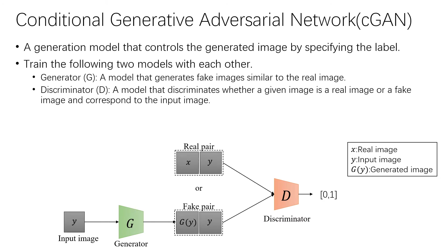In our research, we use Conditional Generative Adversarial Network, also named CGAN, to achieve this task of AdFont generation. CGAN is a generation model that controls the generated image by specifying the label. If we input an image into the network, we can get a corresponding generated image. There are two networks trained with each other in CGAN: one named Generator, which can generate fake images similar to the real image, and another named Discriminator, which can discriminate whether a given image is a real image or a fake image and whether it corresponds to the input image.